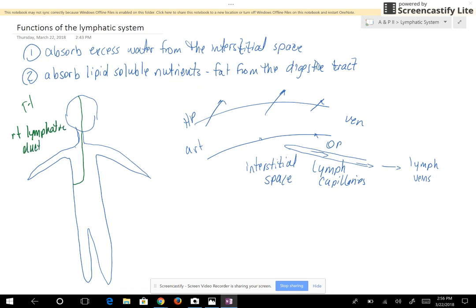The right lymphatic duct would be located somewhere right there, and the right lymphatic duct actually gives the lymph to the subclavian vein.